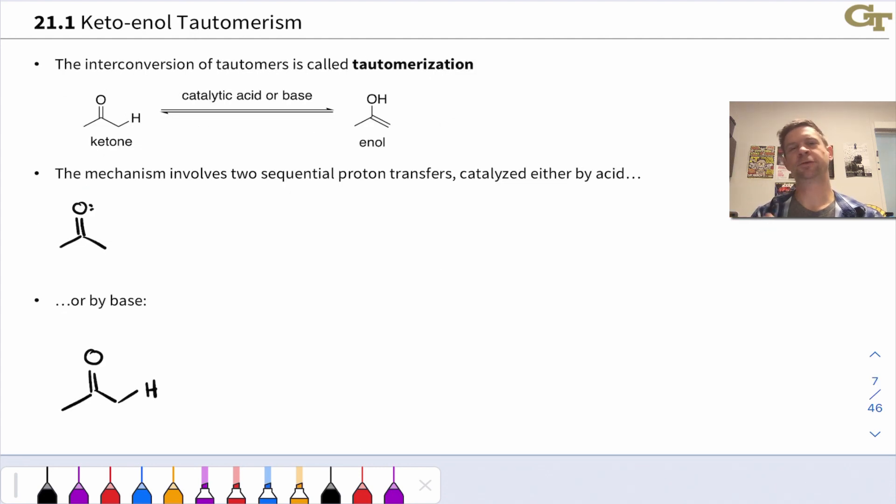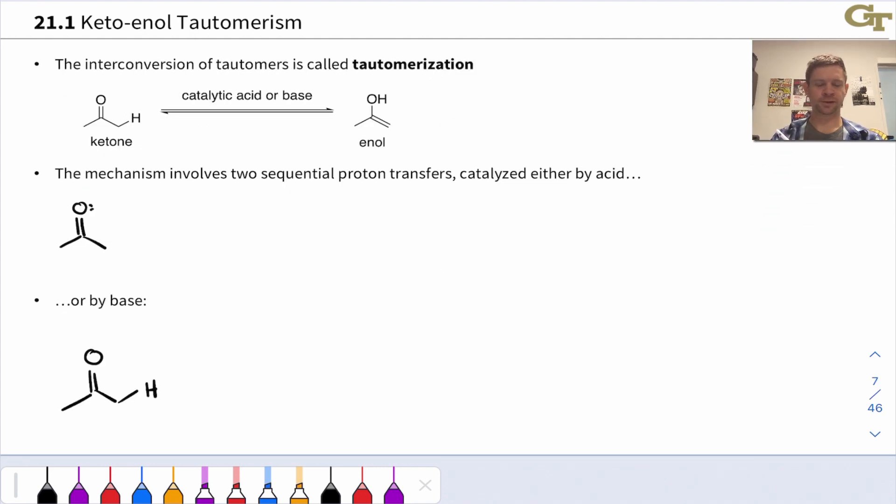We've seen that structurally, the difference between the keto and enol forms is really in the position of this proton. It's linked to the alpha carbon in the keto form and the carbonyl oxygen in the enol form. This leads naturally to questions about mechanism. How does this apparent proton movement occur? You may be tempted to simply use the carbonyl oxygen as a base, use the alpha carbon as an acid, and shift the proton all in one go.